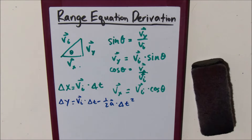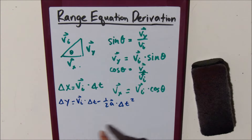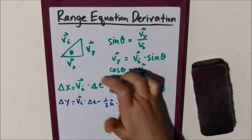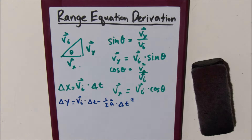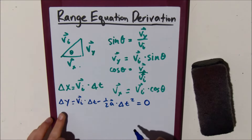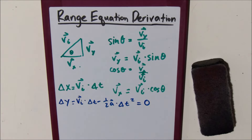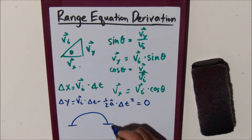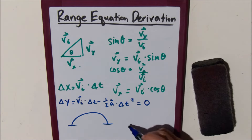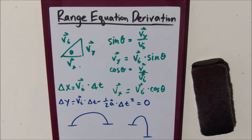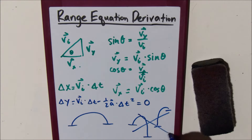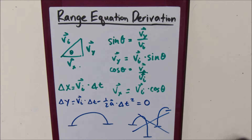What we want to do is rewrite the delta y equation so that it solves for delta t, and then we can plug it into the horizontal equation. We're setting delta y equal to zero. The reason for this is because this range equation only works when there is no change in height. If you try to find the change in x for a projectile that falls off a table or launches up to a table, it wouldn't work — only if there is no change in y.